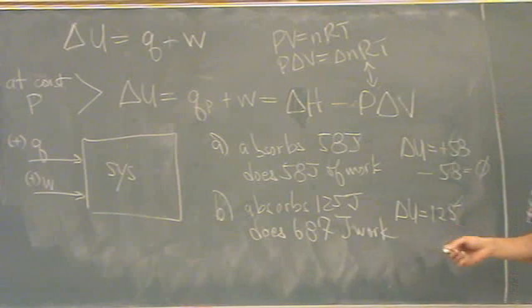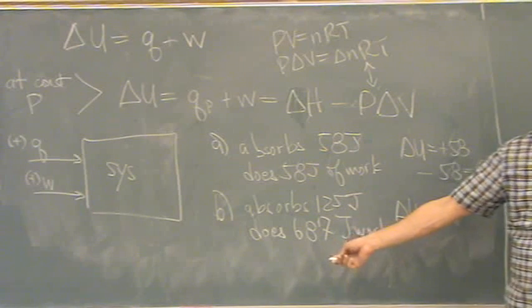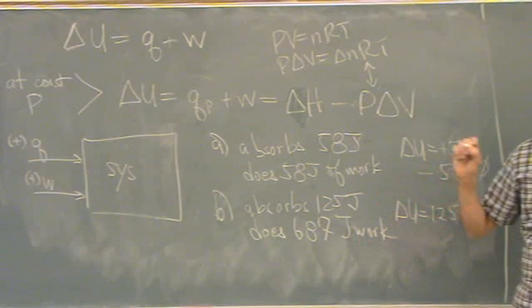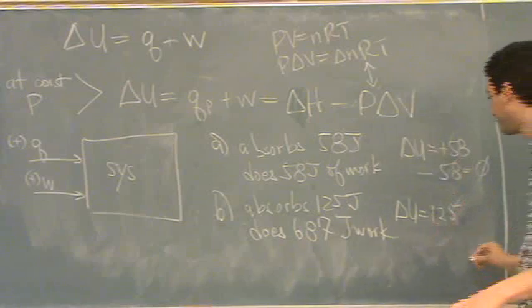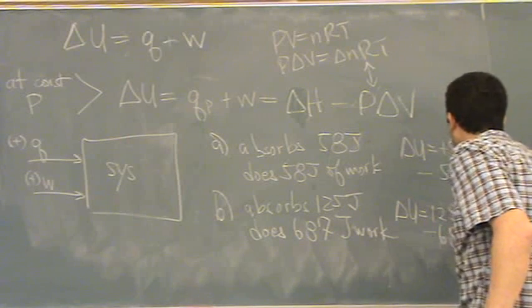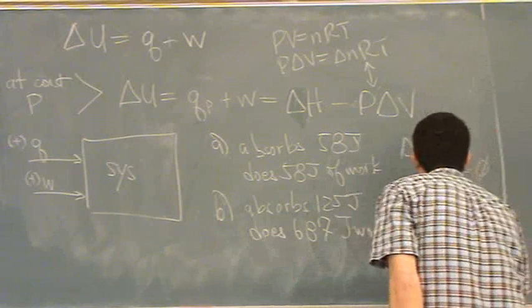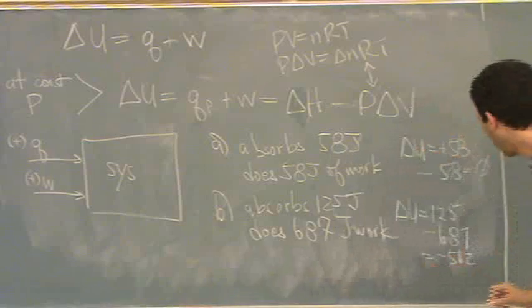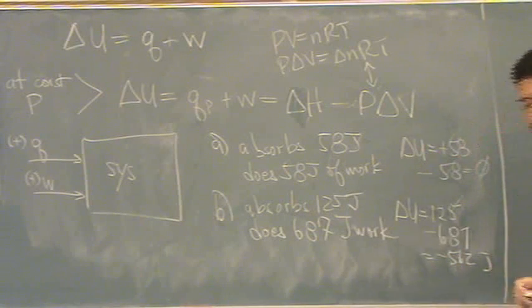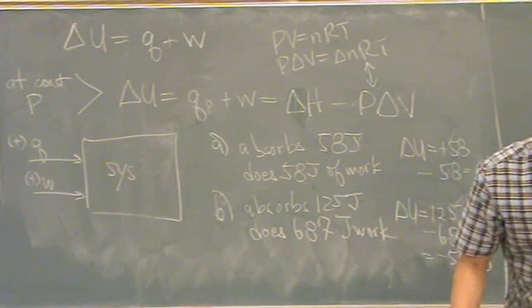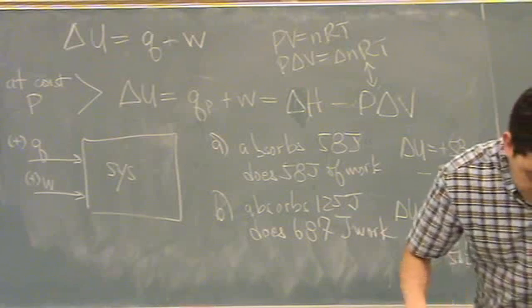And then what's W? Yeah, minus 687, because it does that amount of work. That means work is leaving the system. So they calculated this in the text to see what they got. Thank you. Minus 562. And that's in joules.